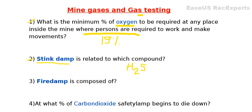The next question is: fire damp is composed of which thing? Pause the video and think about this answer. The correct answer is methane, i.e. CH4. CH4 is generally called fire damp. Or, the mechanical mixture of gases whose major part is methane is called fire damp. So, stink damp = H2S, and fire damp = methane, i.e. CH4.